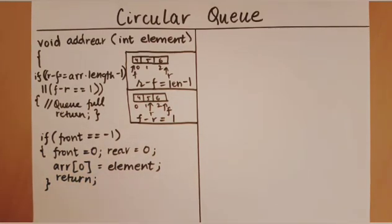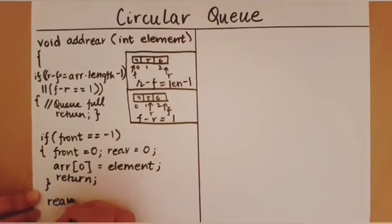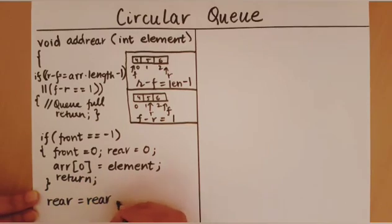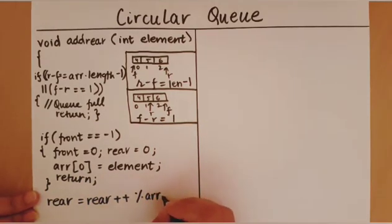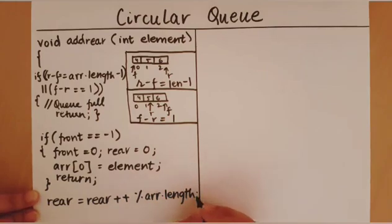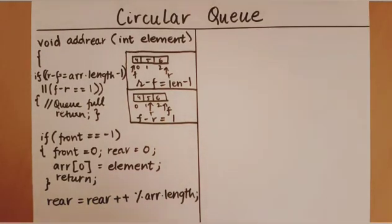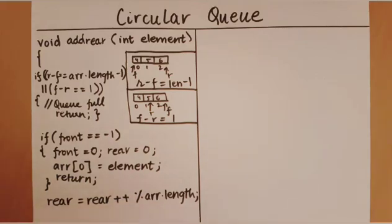When we come to this line of code we are dealing with all the normal cases of adding to the rear. First we change rear to rear plus plus mod array.length. This is equal to rear plus plus, and only when rear plus plus becomes the same as the length does the mod function come into play and it gets reset to zero. Now we insert the element into that index of the array.